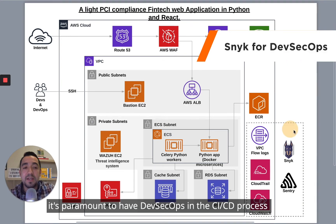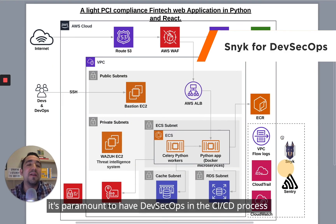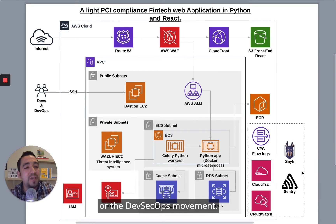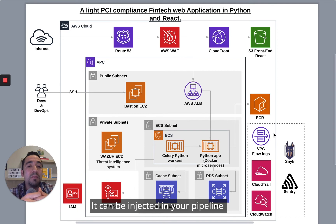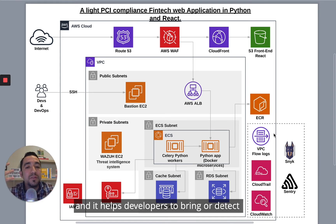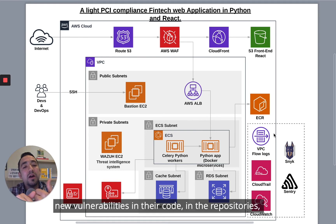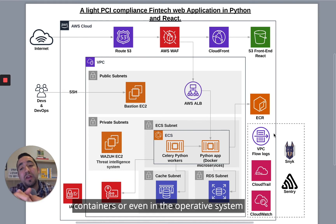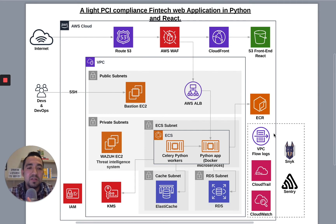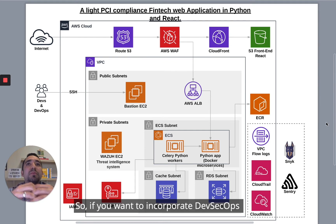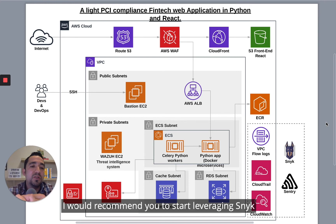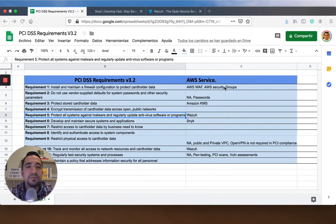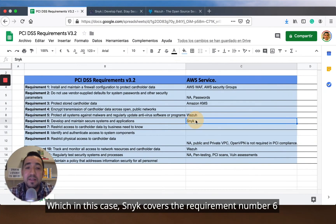The next tool is part of a DevSecOps CI/CD process. It can be injected in your pipeline and helps developers detect new vulnerabilities in their code, in the repositories, containers, or even in the operating system. So if you want to incorporate DevSecOps, I would recommend you start leveraging Snyk. In this case, Snyk covers requirement number six.